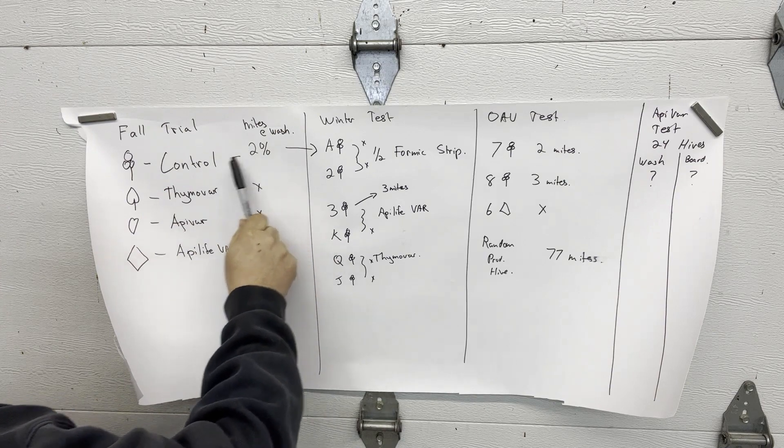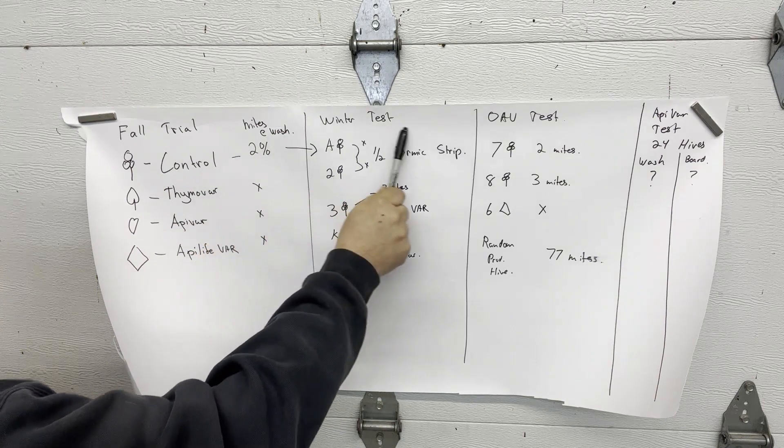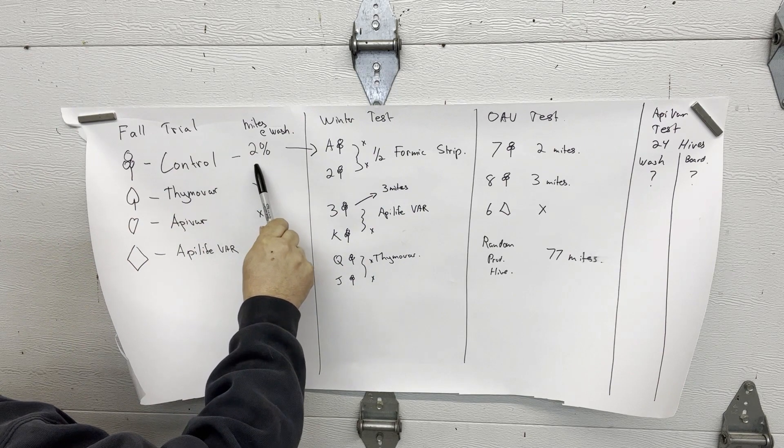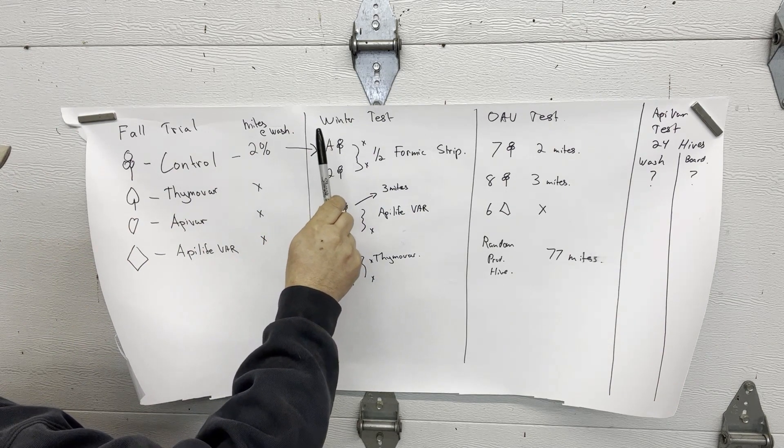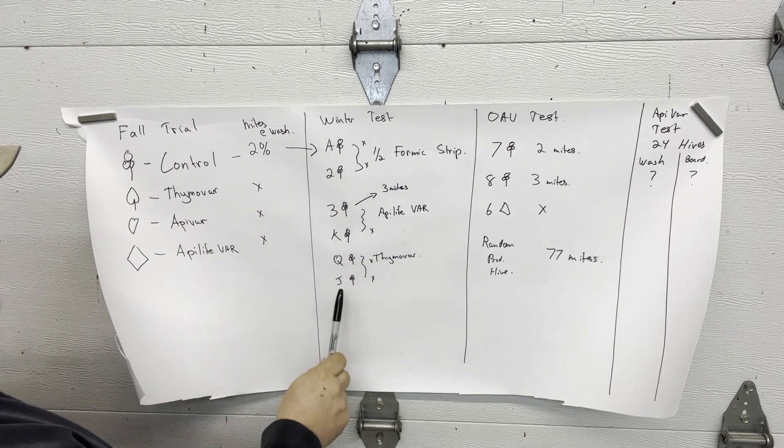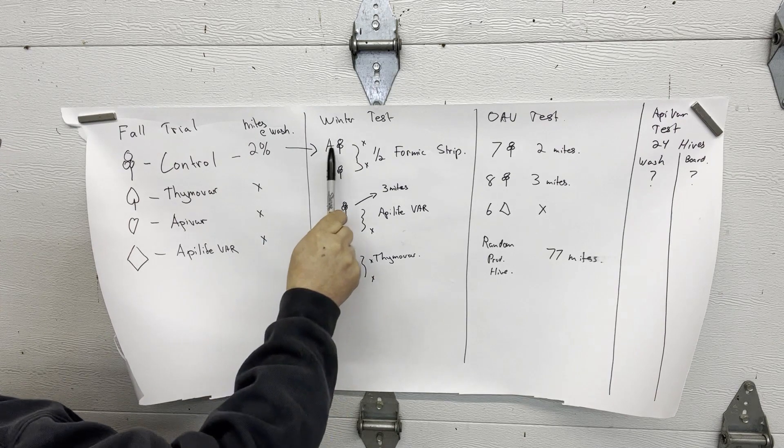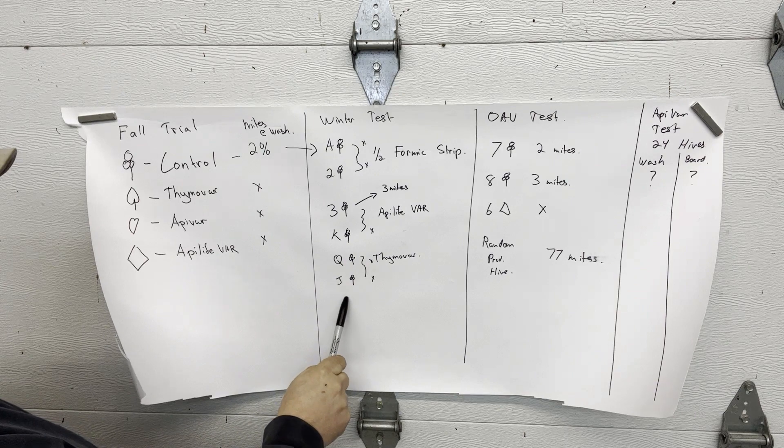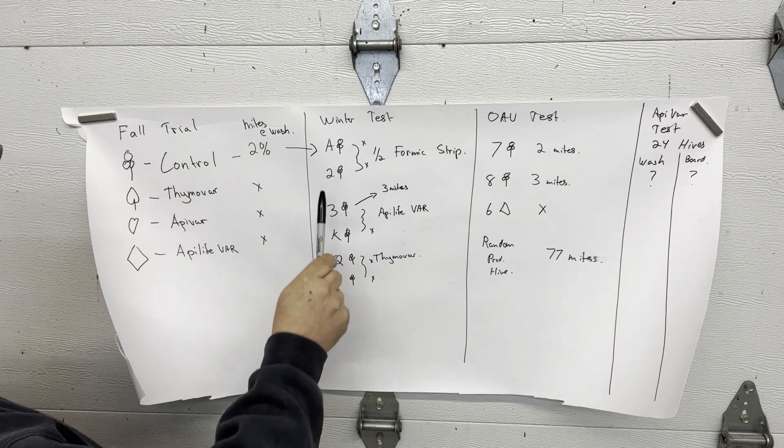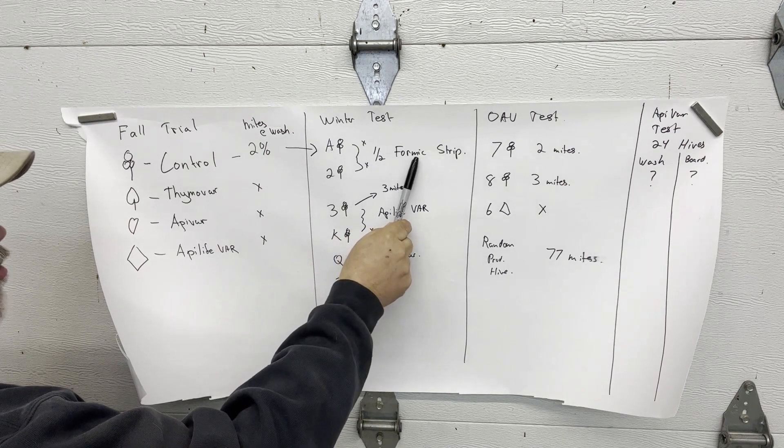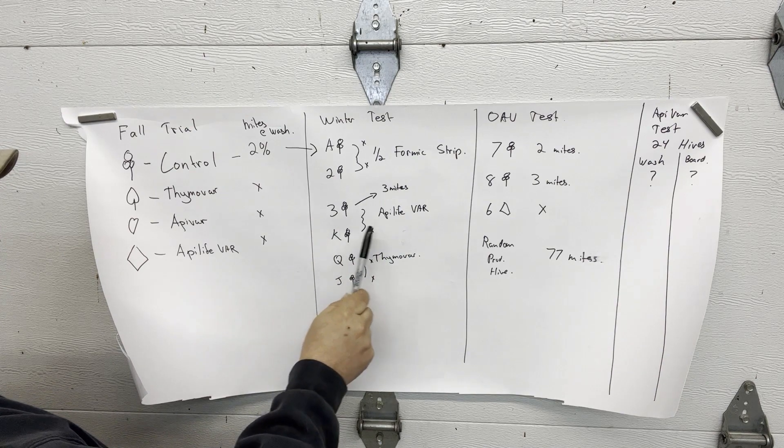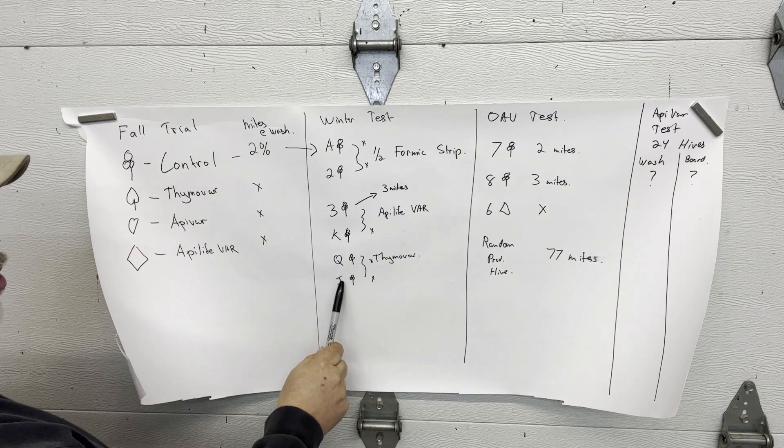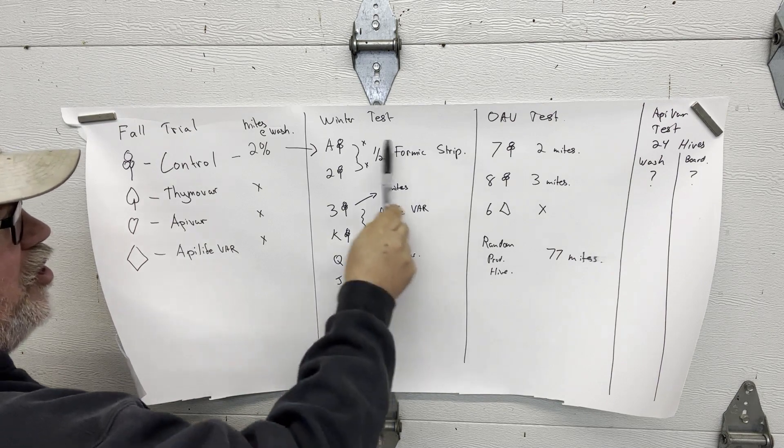So then we thought aha, well we've got a known level of mites in these controls, let's play with this during the winter. We put a bunch of hives on screen bottom boards and we had six of the control hives - the ace of clubs, the two of clubs, three of clubs, the king, queen, and the jack of clubs. And we gave two of them half a formic strip, two of them apolite var and two of them thymavar. Now those were the treatments.